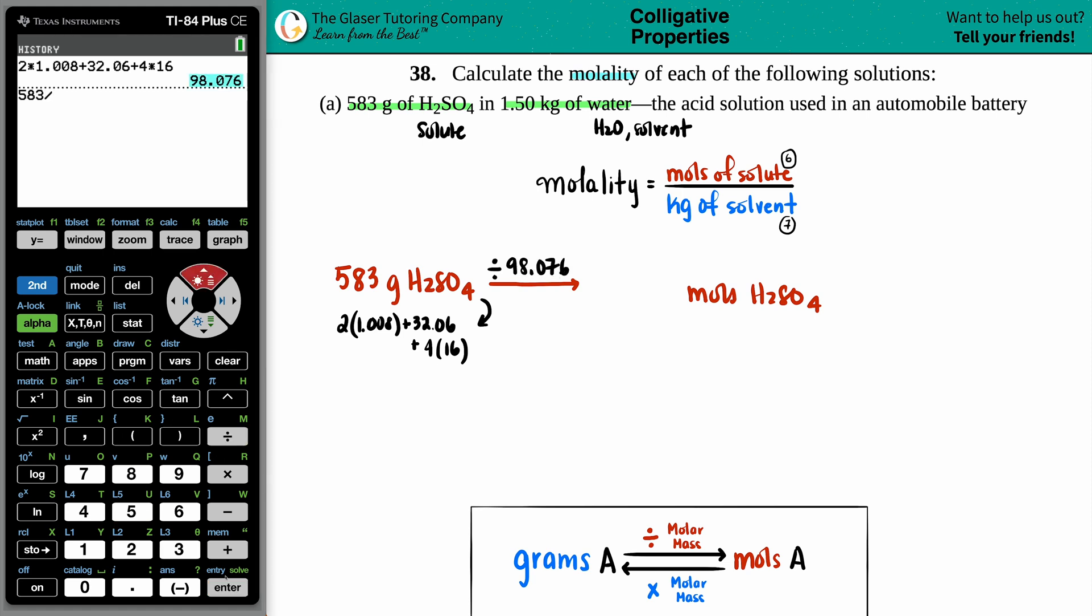So we're going to take the 583 and divide it by the 98.076. Beautiful. Long decimal, but I'll just put a couple of numbers in here. 5.944. That's fine. 5.944.